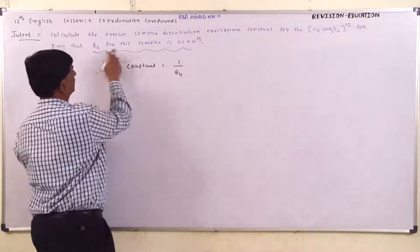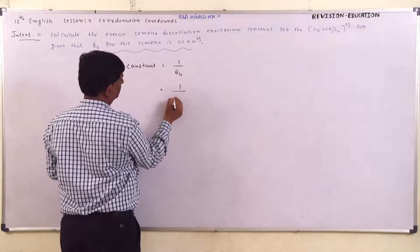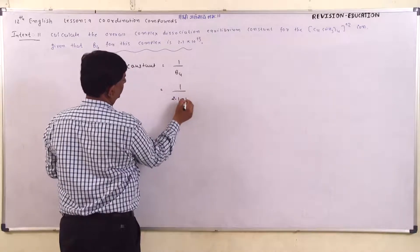Here β₄ is given as 2.1 × 10¹³, so we need to calculate 1/(2.1 × 10¹³).